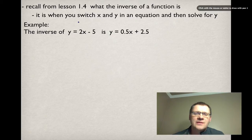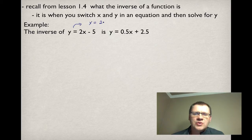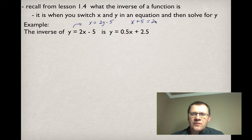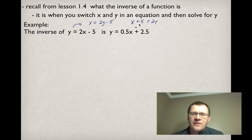I'll show you how we did this. We just switched the x and the y, so this now becomes x equals 2y minus 5. Now we have to solve for y. We move the 5 to the other side, so we get x plus 5 on the left-hand side and 2y on the right. Then to solve for y, we divide both sides by 2. So that becomes 0.5x, and 5 divided by 2 is 2.5.